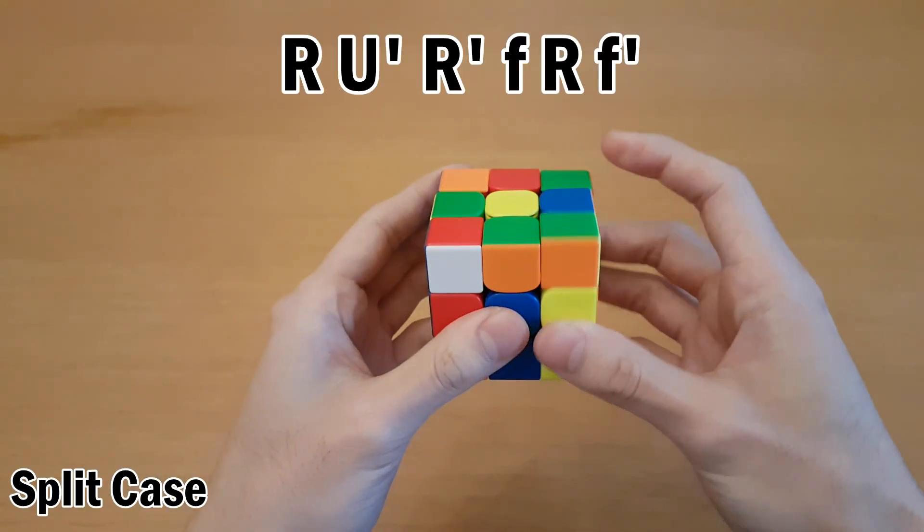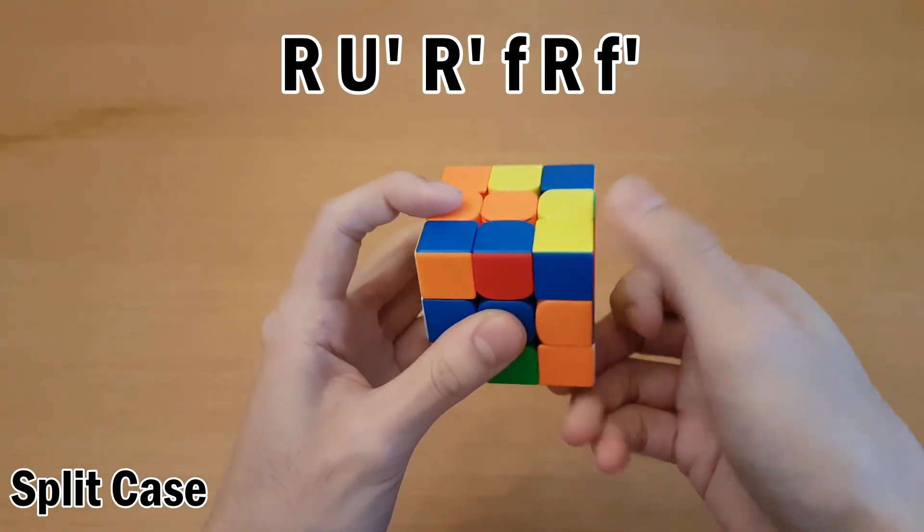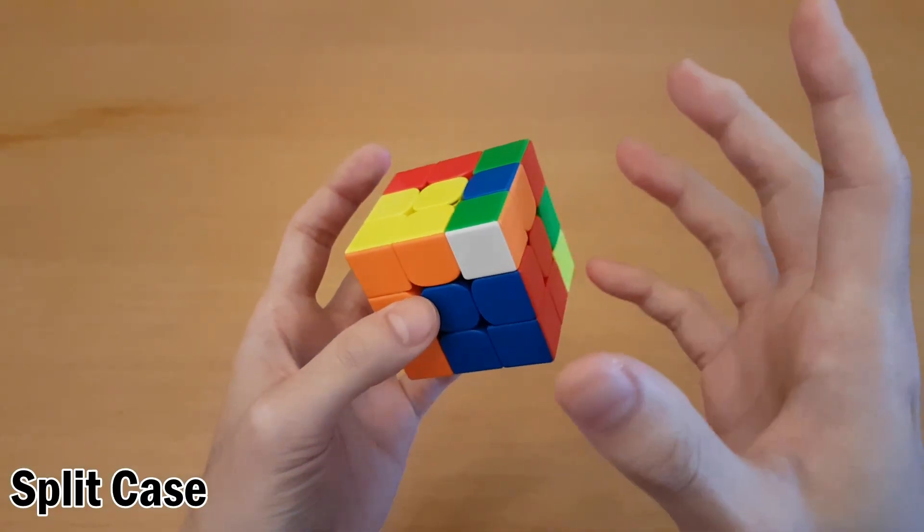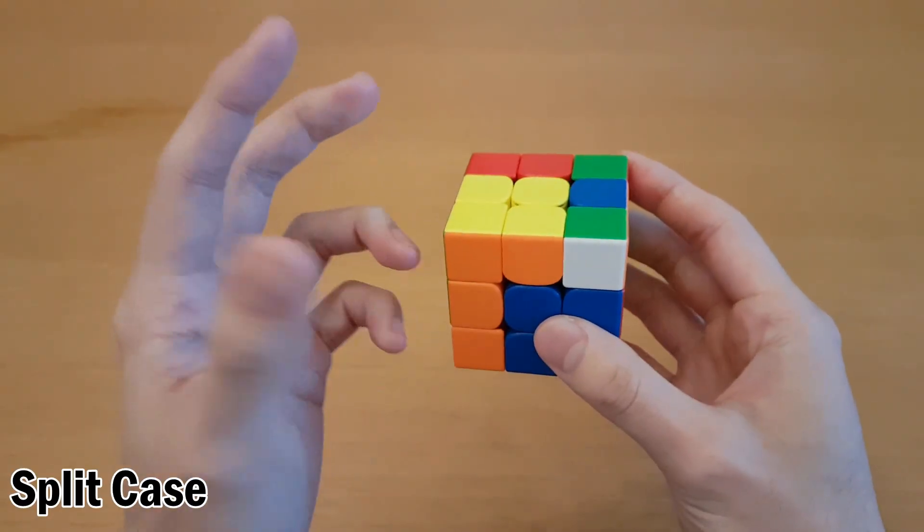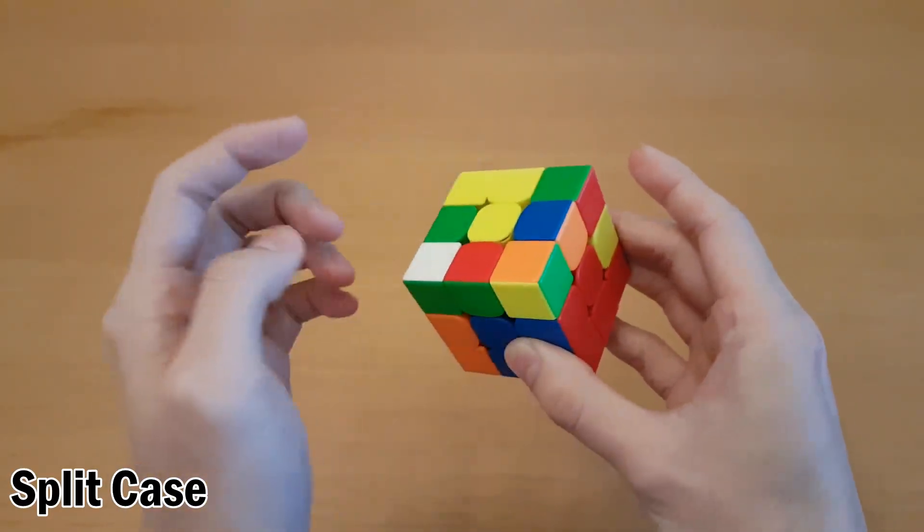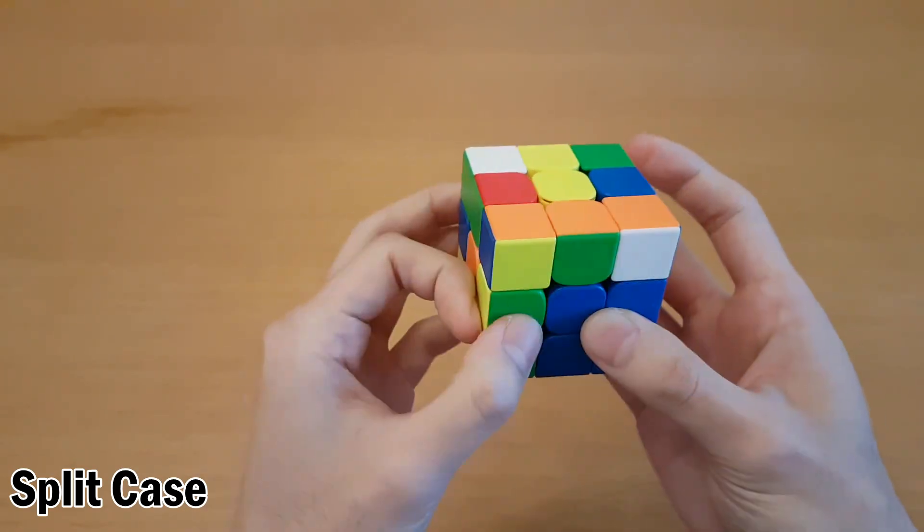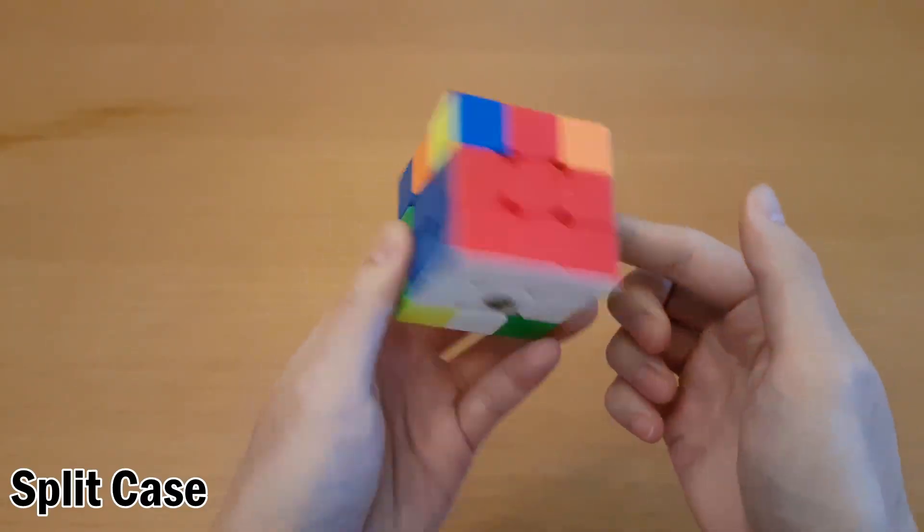And the same idea for this case. Split them up, and then insert. If this slot is solved, you would have to use a different slot, which is usually not preferable, but it still can be done. For example, for this case, you can set them up like this, or you can set them up like this, and either way you'd then lead into the same insert.